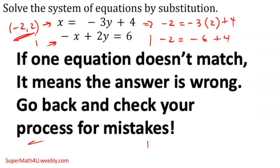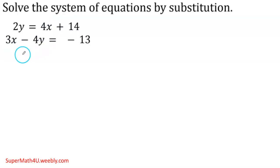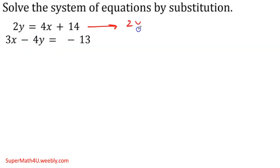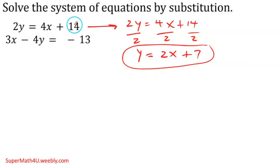Let's try another one — same idea, by substitution. Remember, I had to leave x or y by itself. In this system, neither the y nor the x is by itself, so I choose the easiest one to isolate. I notice I have 2y equals something, so it's only one step to leave y by itself — just divide by 2. I'll write 2y equals 4x plus 14 and divide both sides by 2 so that y is by itself.